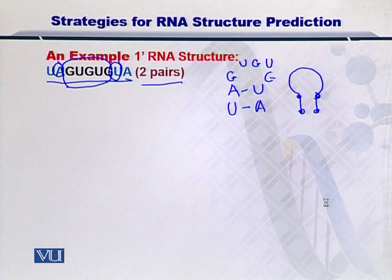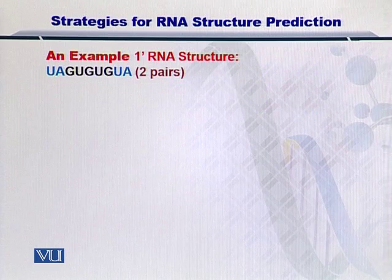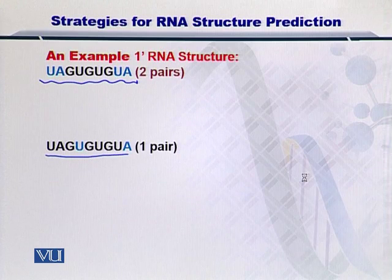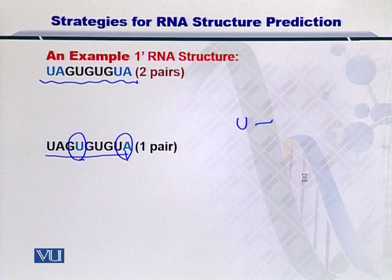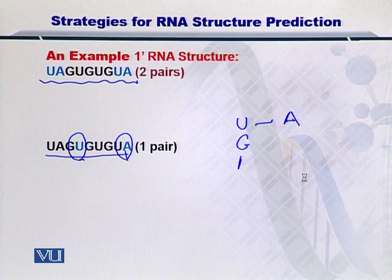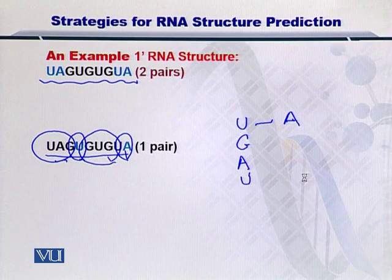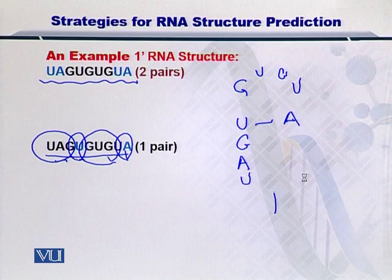Now I will show you another possibility of a 2' structure that can arise from the same sequence but different in the 2' structure. Here is the same sequence as the previous one, but this time we would like to couple this U with this A. The U is coupled with an A. Then besides U, we have G, A, U on this side, which is not coupled with any other nucleotide. The intermediary region contains four nucleotides: G, U and G, U. So it is another kind of hairpin loop, but with one stem longer than the other.